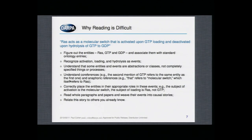You don't recognize how difficult reading is because you do it all the time without thinking about it. But for computers, reading is really a problem. Consider the sentence: RAS acts as a molecular switch that's activated upon GTP loading and deactivated upon hydrolysis of GTP to GDP. You read it without a second thought, but a machine has to figure out what the entities are — RAS, GTP, GDP — and associate those entities with the standard ontologies. It has to recognize activation, loading, and hydrolysis as events. But importantly, it has to understand that some events and entities are actually classes of things or abstractions — they may not resolve to a gene ontology identifier. They're abstract classes.